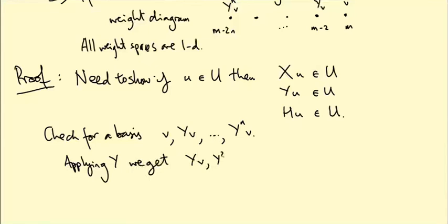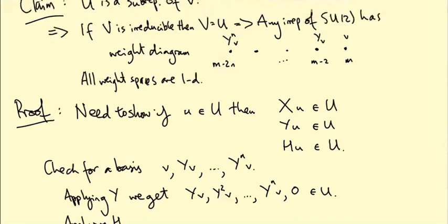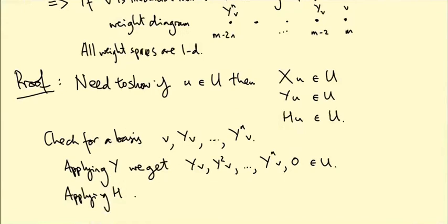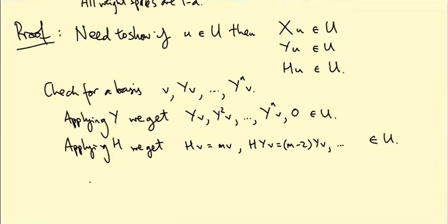So we get Y V, Y squared V, Y to the N V, zero. And they're all in U. So we can apply Y to anything inside U, and we stay in U. Applying H. Well, remember, each of these vectors, V, Y V, Y squared V, et cetera, is in a weight space. Therefore, it is an eigenvector of H. So H V equals M V, because V was a weight vector with weight M. H Y V is, well, this is now a weight vector with weight M minus two, so we get M minus two Y V, et cetera. And they're all going to be in U, because they're just multiples of the Y to the N Vs. So the only question is, what happens if we apply X?